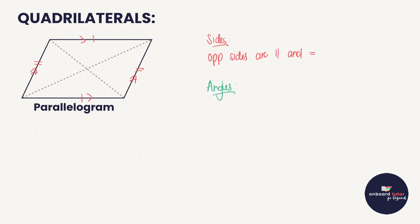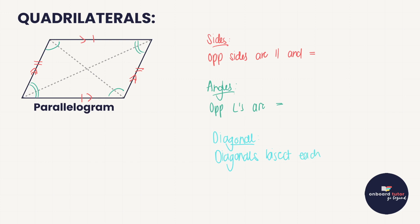The opposite angles are equal — so that one and that one. Opposite angles of a parallelogram are equal to each other. Then, what do we know about the diagonals? A diagonal is a line drawn from one corner of the shape to the opposite corner, and in a parallelogram the diagonals bisect each other.